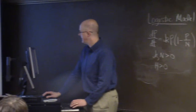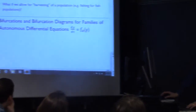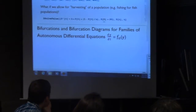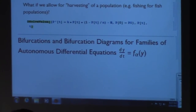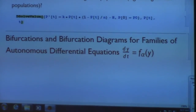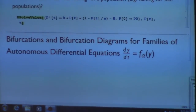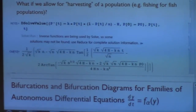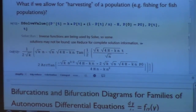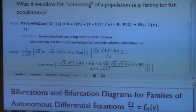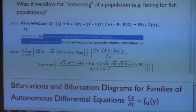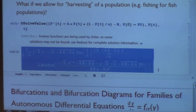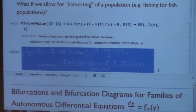Let's see if DSolve can deal with it. I'll go ahead and put a minus H in there. It's giving us some dangerous signals: inverse functions are being used, so some solutions may not be found. It's given us an answer, but based on the warning, it's hard to know if it's going to be correct. It might depend on what the additional condition is. Let's go ahead and test it to see if it might work.